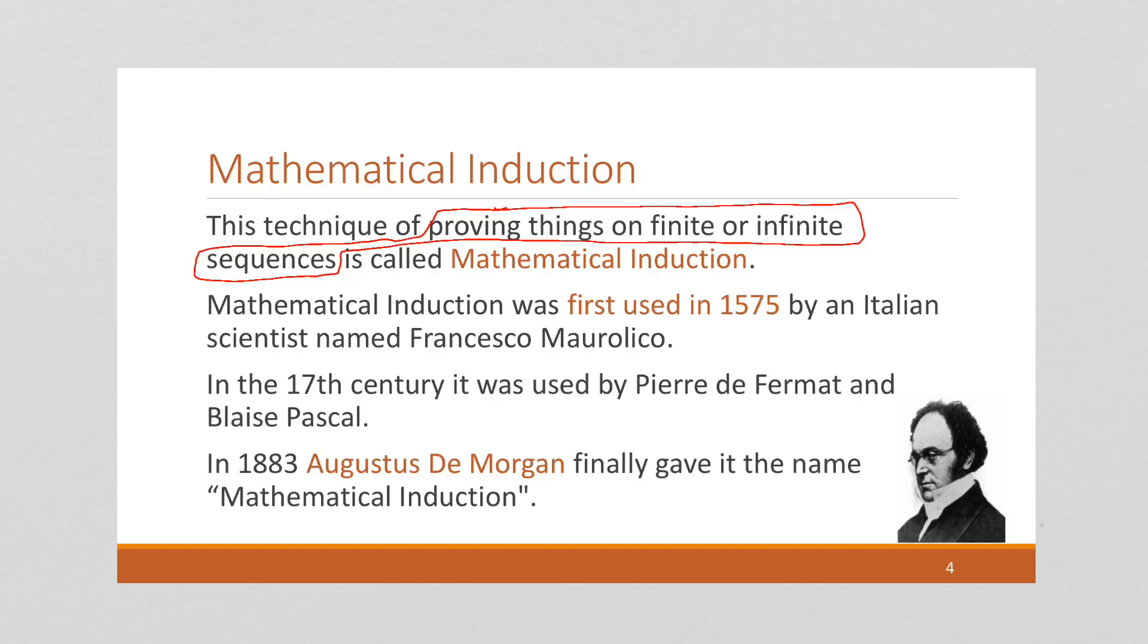It's relatively new by proof standards. It was first used in 1575. Consider the other proof techniques we've used, the direct proof, the proof by contradiction, and so on, were used in ancient Greece 2,000 and more years ago.